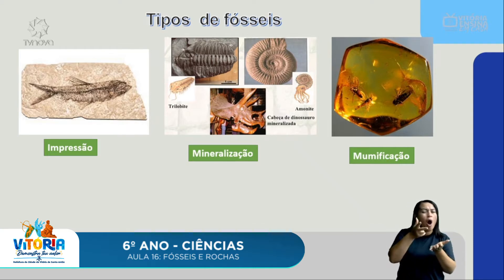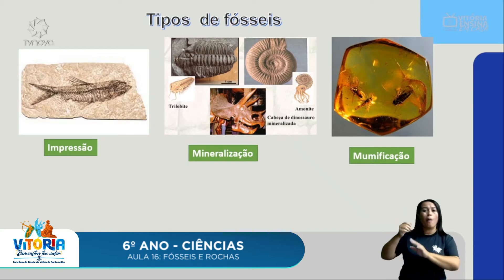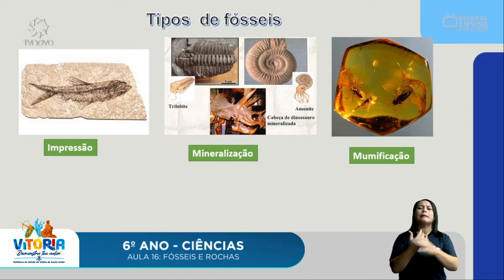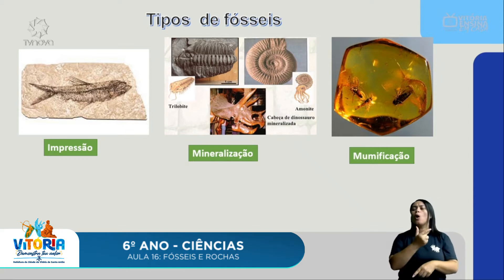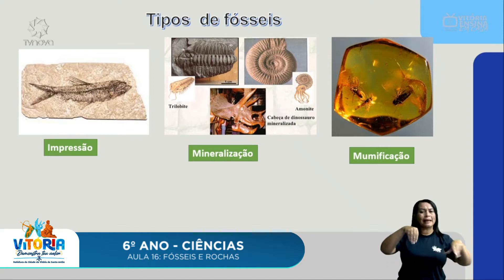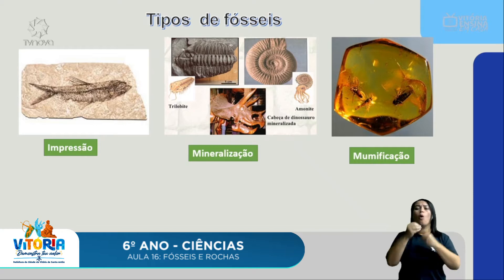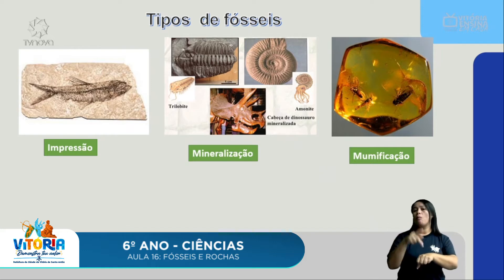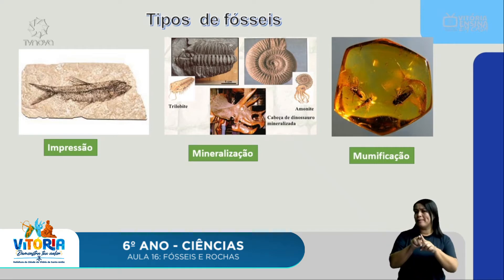No tipo impressão, você consegue observar as linhas do esqueleto do animal como se fosse uma marca na pedra. É muito comum também na fossilização de plantas, em que a marca da folha fica impressa na rocha. O outro tipo de fossilização é a fossilização por mineralização, em que toda a parte dura do animal — carapaças, ossos, esqueleto externo de insetos — é preenchida por minerais que formam esse fóssil.